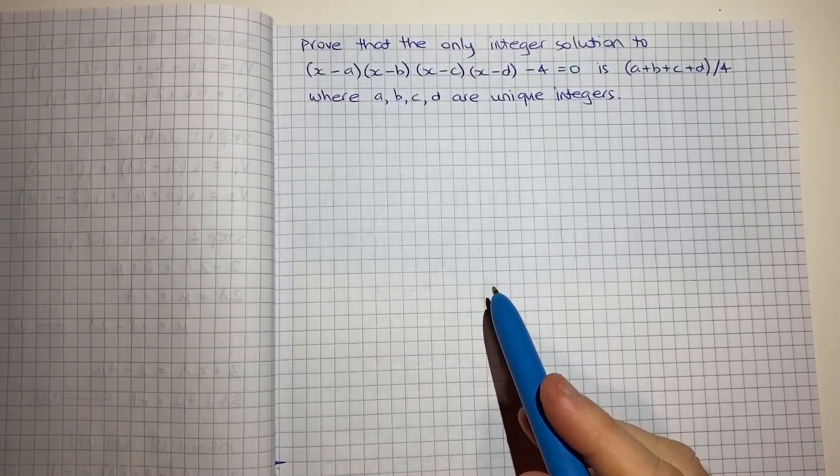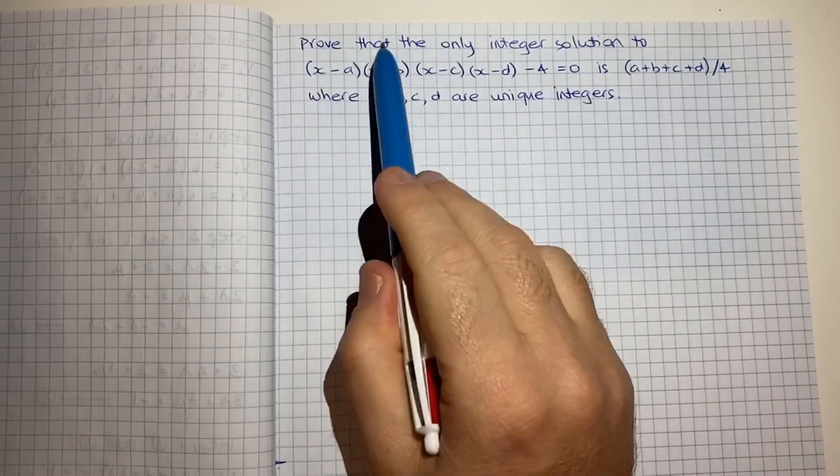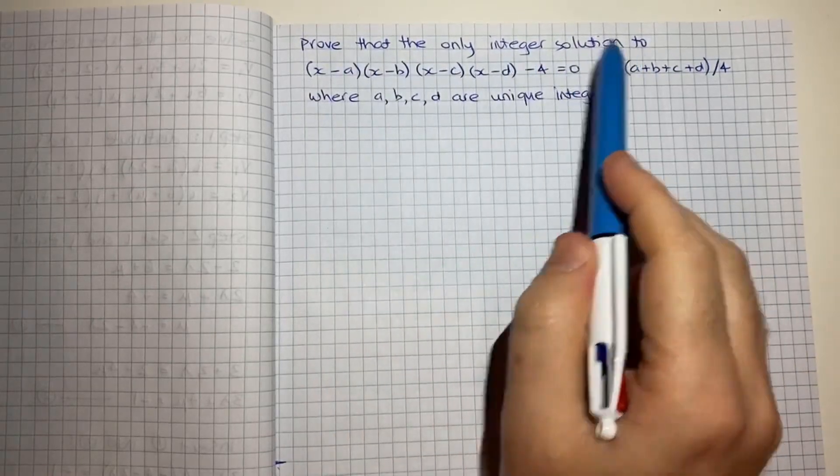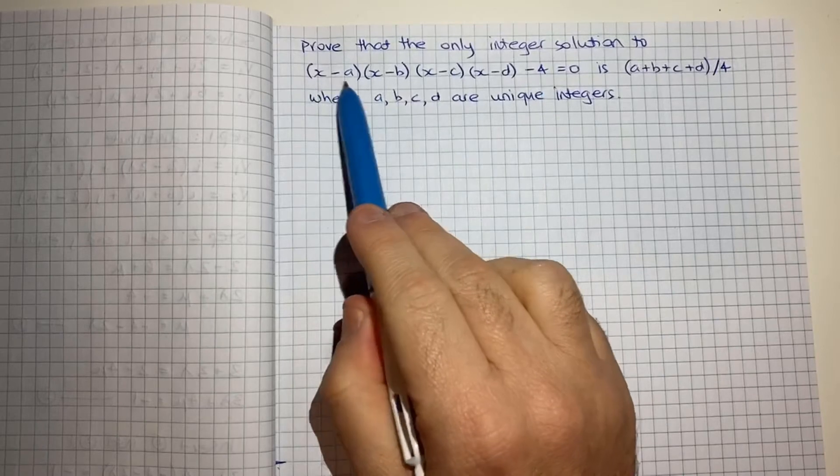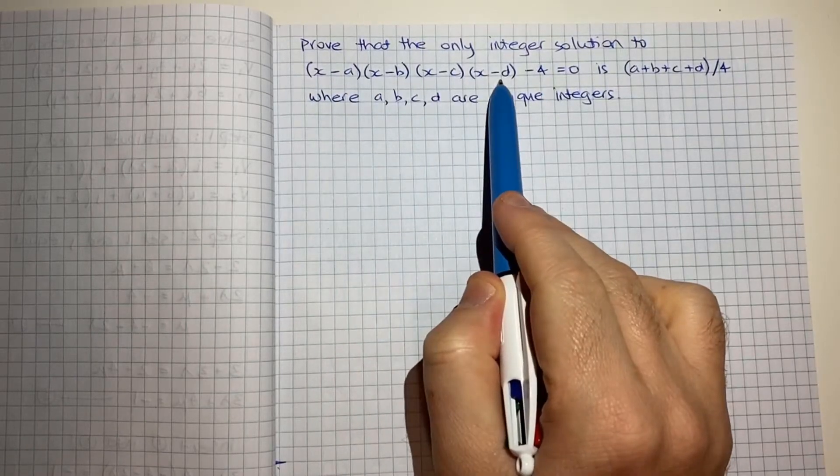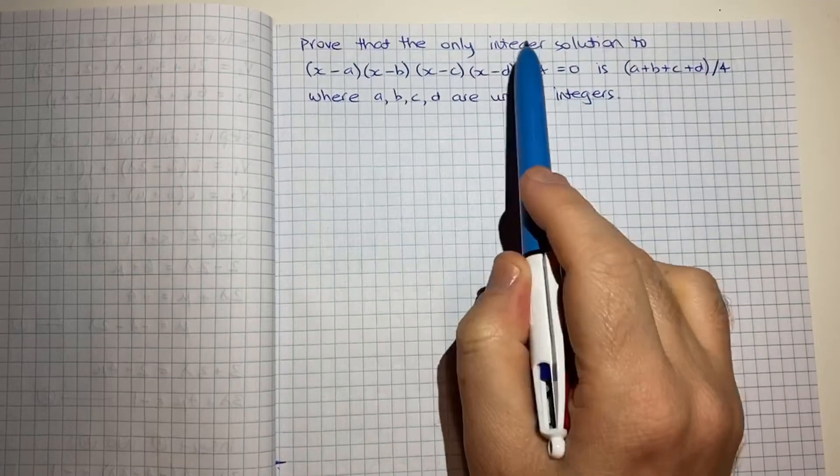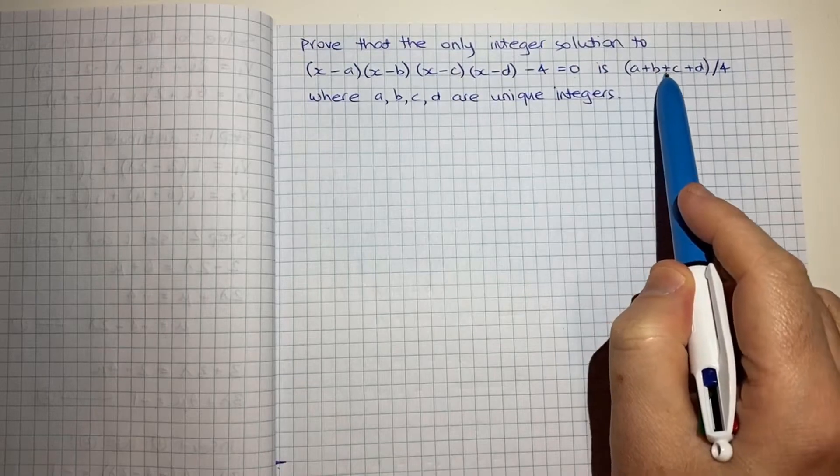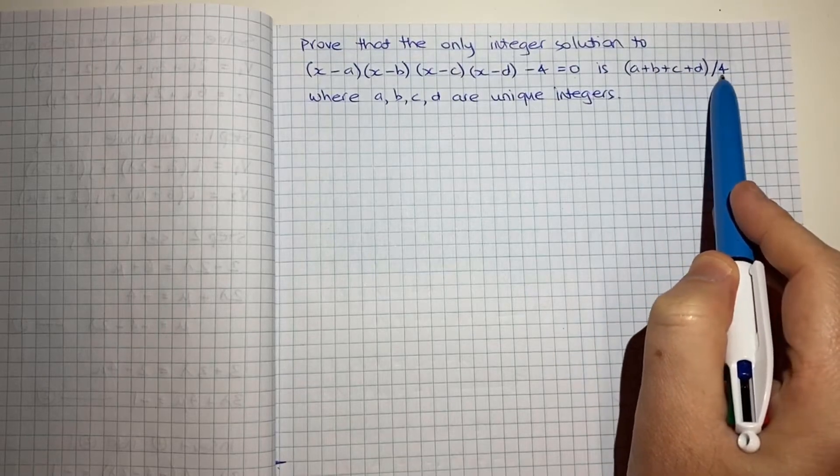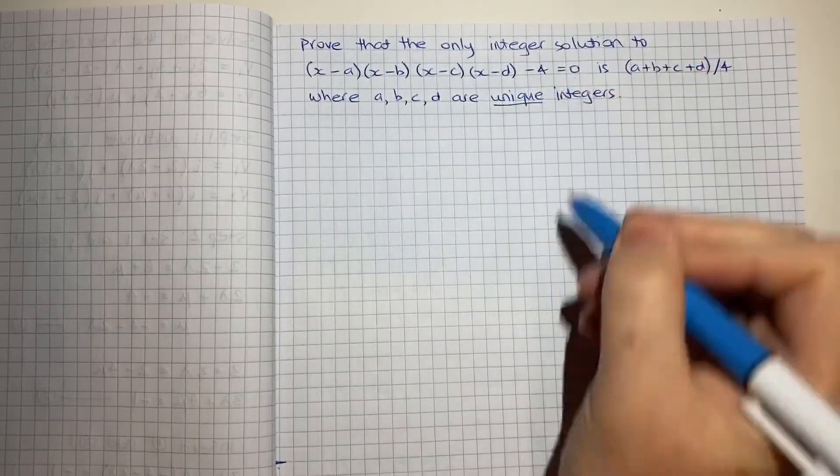Hello and thanks for using TickBoom. In this question we're being asked to prove that the only integer solution to this equation (x-a)(x-b)(x-c)(x-d) - 4 = 0. We need to prove the only integer solution to that is (a+b+c+d)/4, where a, b, c and d are unique integers.